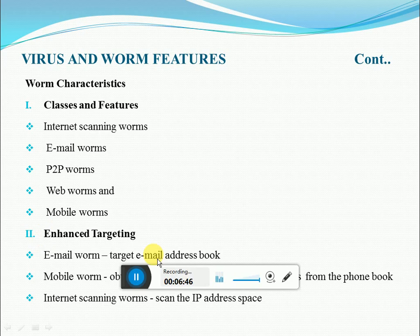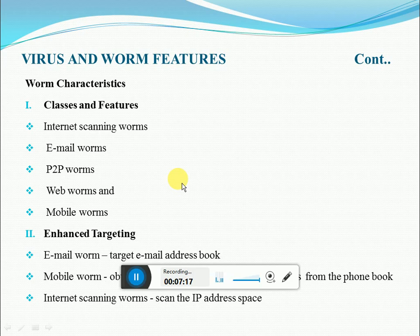Next we'll discuss the features of worms, starting with enhanced targeting. The most important attribute of a worm is that it spreads its infection to other computers — but how does a worm know who its next target is? There are different ways a worm detects its target. Worms that spread through email have an easy way: they look into the victim's mailbox or email address book to find targets. A mobile worm obtains phone numbers of potential victims from the phone book in the cell phone.